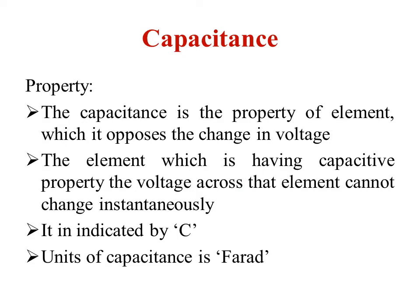If we observe the property of capacitance, it is the property of an element which opposes the change in voltage. That is, whenever some change in voltage is applied to a particular element and it opposes that change, then it is having capacitance property. Also, the voltage across a capacitive element cannot be changed instantaneously. Capacitance is indicated by C, and its unit is the farad.